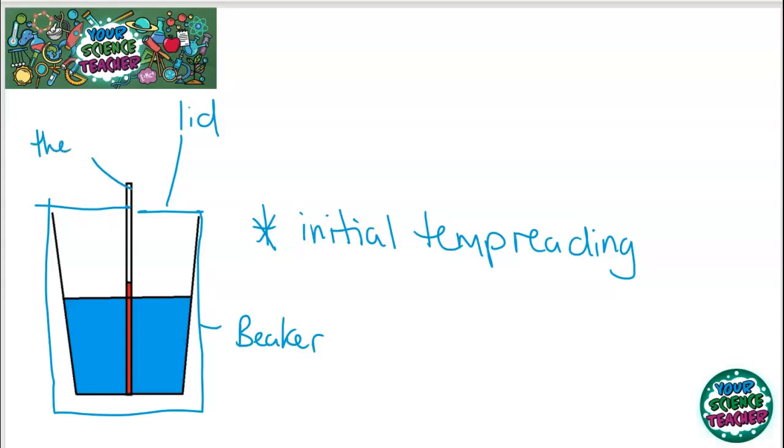This is obviously a thermometer and what you need to do in this practical is just record the temperature every few seconds and then see whether the temperature goes up or down. If it goes up, remember that it's exothermic. If your temp goes up, exo, and if it goes down, then it's endothermic.